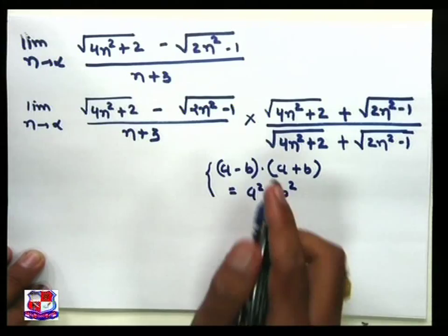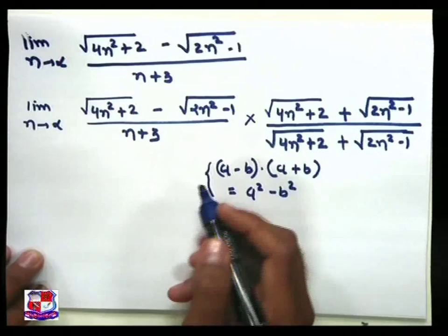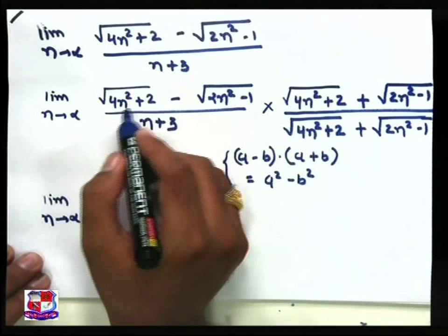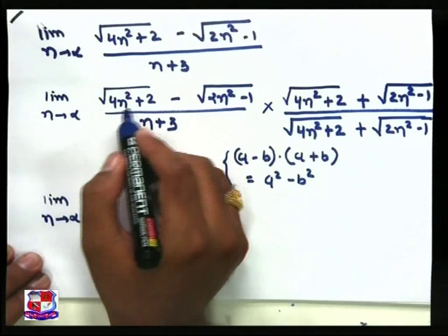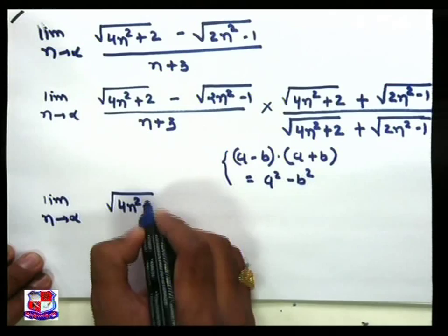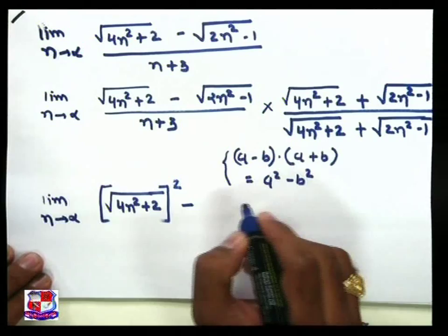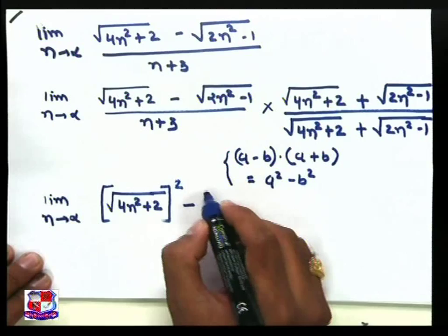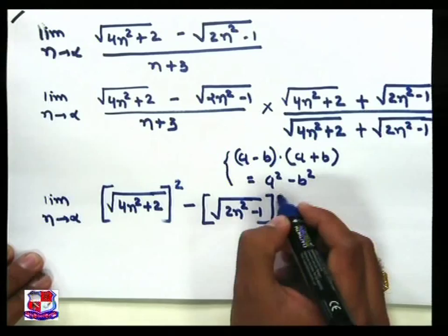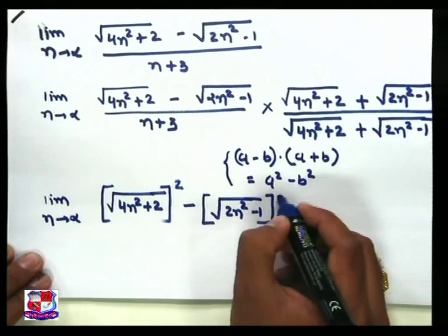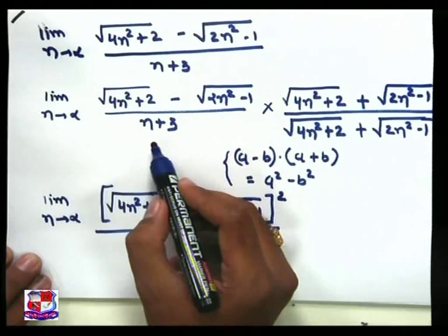Here limit n tends to infinite: a² is nothing but [√(4n² + 2)]² minus b² where b is √(2n² − 1), so [√(2n² − 1)]². The denominator is (n + 3). And the denominator also contains √(4n² + 2) + √(2n² − 1) written as it is.